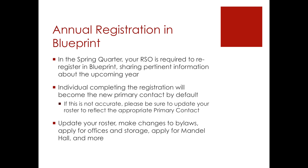In addition to training, you have a requirement to complete annual registration through Blueprint. Every spring quarter, your RSO is required to share pertinent information about the upcoming year, including transition information, new officer contact information, and more. The individual completing the registration will become the new primary contact by default. If this contact information is not accurate, please be sure to update your roster to reflect the appropriate primary contact. Through the annual registration process, you will be able to update your roster, make changes to bylaws, apply for offices and storage, apply for Mandel Hall, and more.